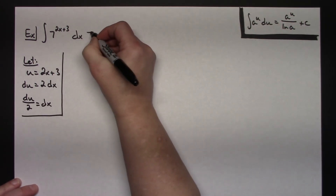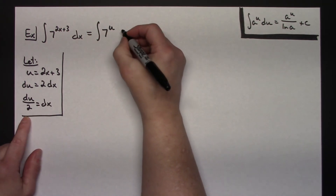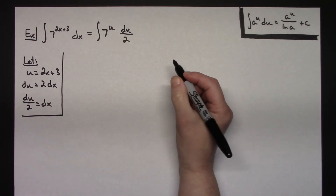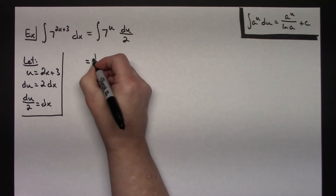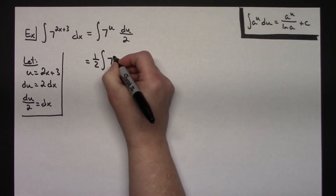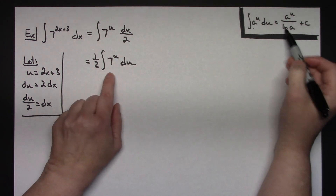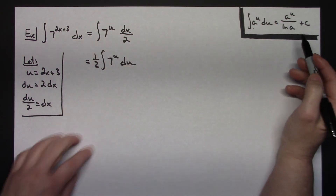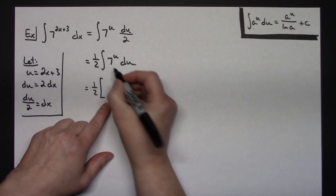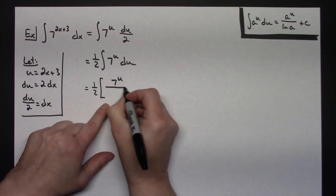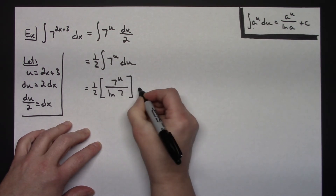Coming back up and doing some substitutions, I'll have the integral of 7 raised to the u — replacing the exponent with u — and replacing dx with du over 2. Nothing crosses out at that point, but the one half can be pulled out in front of the integral. Now I implement the formula: I'll have one half times a to the u over natural log of a. My a is 7 in this case, so I have one half times 7 raised to the u all over natural log of 7, plus c.